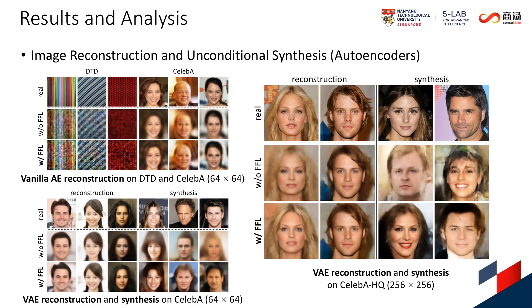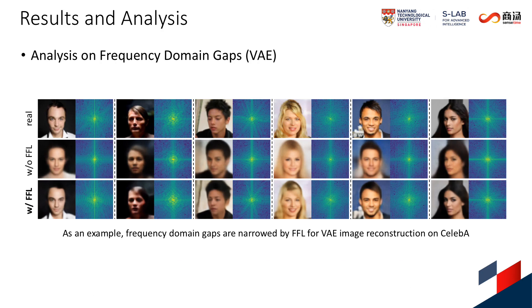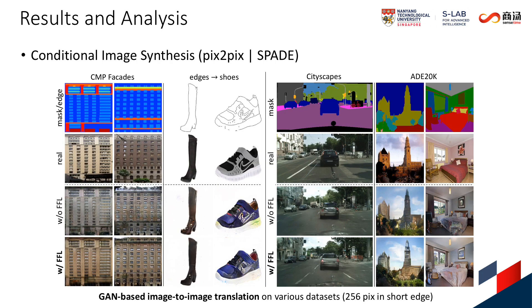Here are the results of image reconstruction and unconditional synthesis on autoencoders. FFL helps generate high-frequency details and improves quality. As an example, gaps in the frequency domain are clearly narrowed by FFL for VAE reconstruction on CelebA. For conditional synthesis, we examine two typical GAN-based image-to-image translation methods, pix2pix and SPADE. FFL improves image quality by reducing unnatural artifacts and generating essential details.